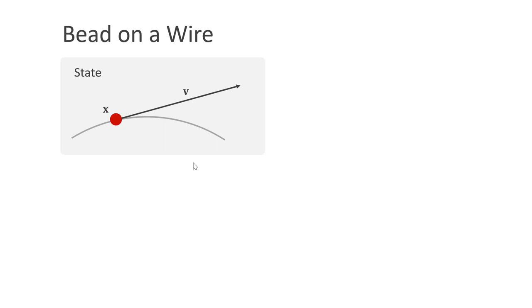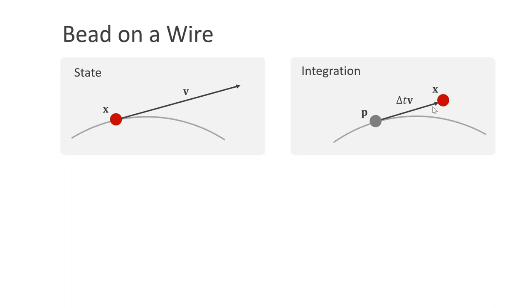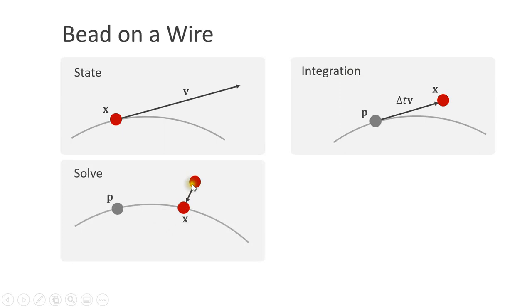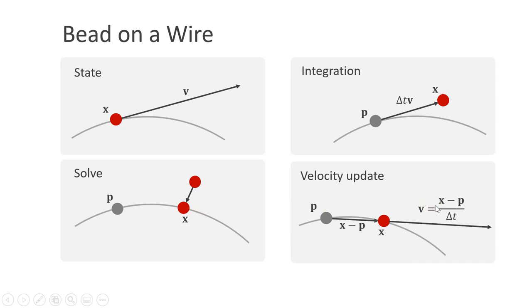Let us now start with a simple example: a bead on a wire. We looked into this problem already in tutorial number 5. Let's assume we have a bead with position x and velocity v and we want it to stay on the wire. The first step is integration using an explicit Euler integration step — we multiply the velocity times the time step size and add it to the position. x is now the unconstrained position. Next, we solve the constraint by moving the bead to the closest position on the wire. Finally, we update the velocity as the current position minus the previous position divided by delta t. Position-based dynamics is an integrator and a solver at the same time.